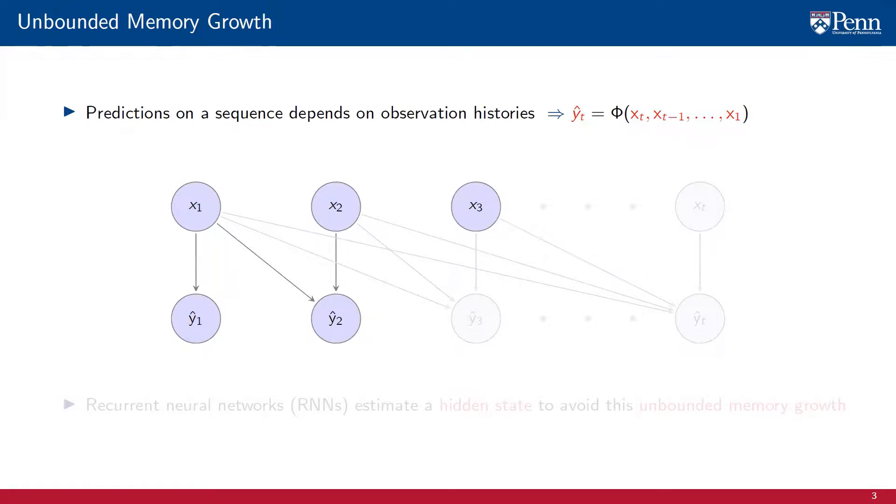At time 3, we observe input X3. To make a prediction Y hat 3, this prediction has to depend on the observation X3, but also on the observations X2 and X1. Memory has tripled. More importantly, the complexity of the task cubes, because the complexity of sampling a space grows exponentially with its dimensionality.